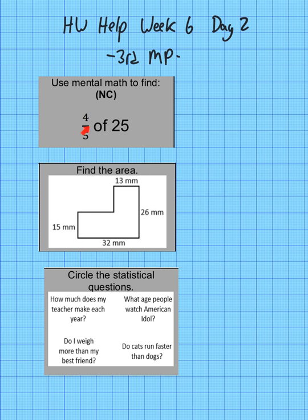First, let's start with this one: use mental math to find four-fifths of 25. So remember this trick for doing it: you start with the 25 and divide by five. 25 divided by 5 is 5—that's one-fifth of 25. To get four-fifths, you then multiply by 4. So 25 divided by 5 is 5 times 4 is 20. So 20 is four-fifths of 25.